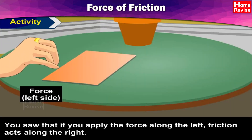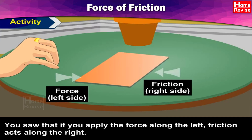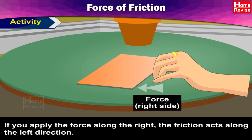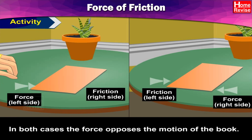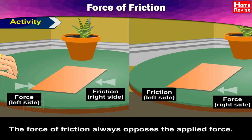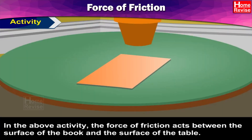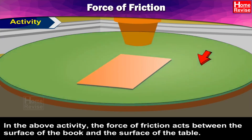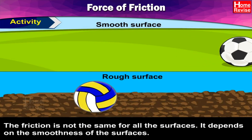If you apply the force along the left, friction acts along the right. If you apply the force along the right, the friction acts along the left direction. In both cases, the force opposes the motion of the book. In fact, the force of friction always opposes the applied force. In this activity, the force of friction acts between the surface of the book and the surface of the table. Friction is not the same for all surfaces — it depends on the smoothness of the surfaces.